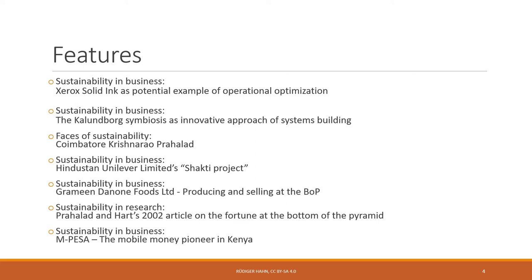The feature on pioneers of sustainability is about CK Prahalad, essentially the father of the BOP idea, who really brought this concept forward. Then there are two more sustainability in business features: the first is about Hindustan Unilever Limited's Shakti project, one of these BOP 1.0 approaches, and the second is about Grameen Danone Foods as a potential BOP 3.0 approach, especially in Bangladesh, producing and selling at the BOP with a social business idea.